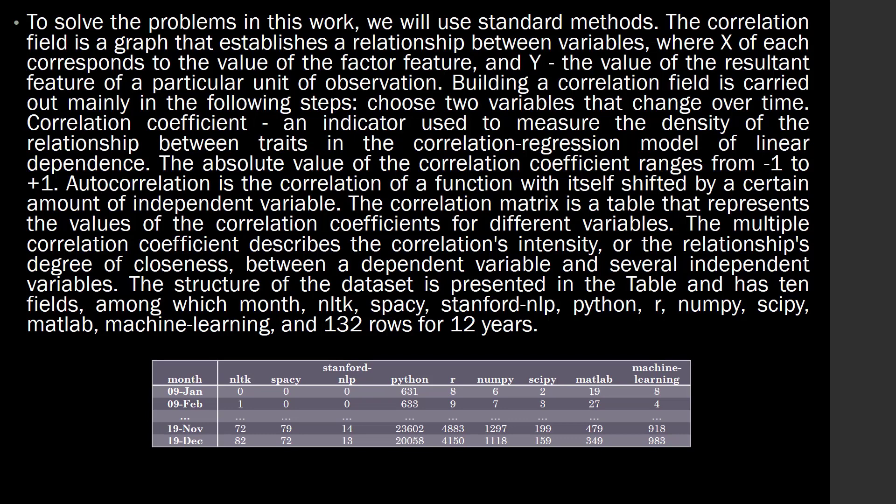To solve the problem in this work, we will use standard methods. The correlation field is a graph that establishes a relationship between variables, where x corresponds to the value of the factor feature and y the value of the resultant feature of a particular unit of observation. Building a correlation field is carried out mainly in the following steps: choose two variables that change over time.